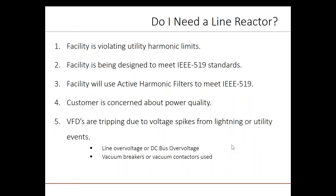Secondly, a facility is being designed to meet IEEE 519 standards. As in the first case, reactors may be the solution or be part of the solution. Third, a facility is being designed for meeting IEEE 519 compliance and active harmonic filters are going to be used. Active harmonic filters, like our HPS TrueWave product, work like noise-canceling headphones. Instead of cancelling audio waves with speakers, an active harmonic filter creates harmonics equal to but opposite those created by the VFDs. Active harmonic filters will benefit from each VFD having a line reactor. If a customer expresses concerns about power quality, their first consideration for minimal costs should be adding line reactors for their VFDs.